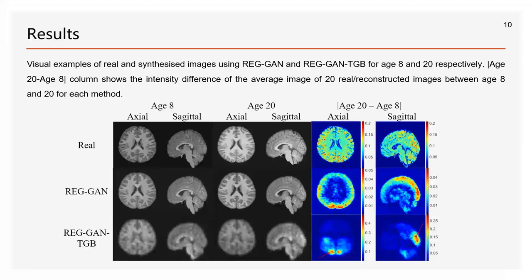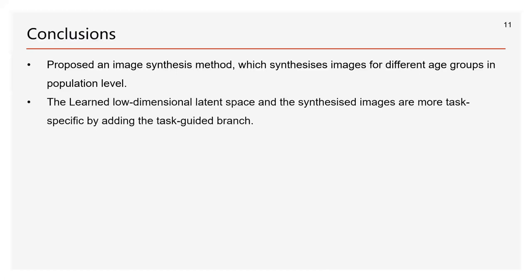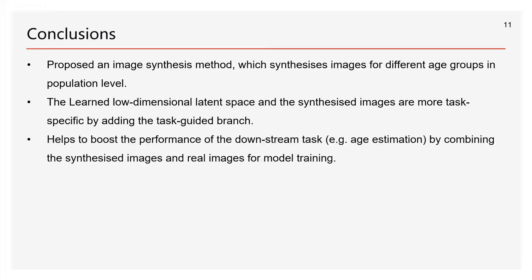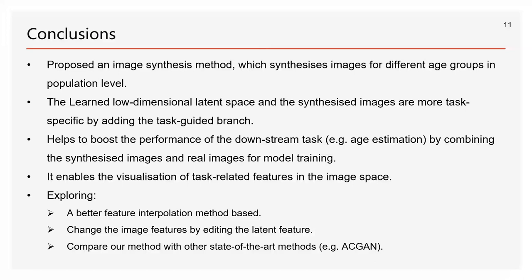This finding needs to be further confirmed in brain science research. In this paper, we proposed an image synthesis method that synthesizes images for different age groups at the population level. The learned low-dimensional latent space and synthesized images are more task-specific by adding the task-guided branch. It helps to boost the performance of the downstream task by combining synthesized and real images for model training, and enables visualization of task-related features in the image space. For future work, we aim to find a better feature interpolation method and try to modify image features by manipulating the latent feature. We also want to compare our method with other state-of-the-art methods like ACGAN. That's all of my presentation. Thanks for watching.